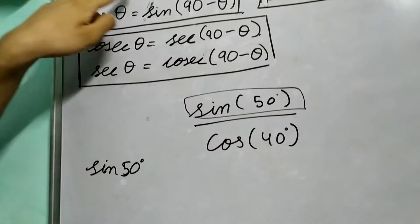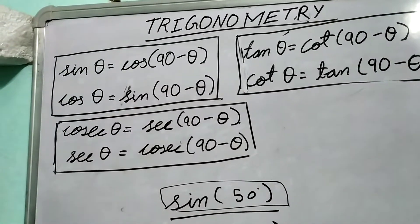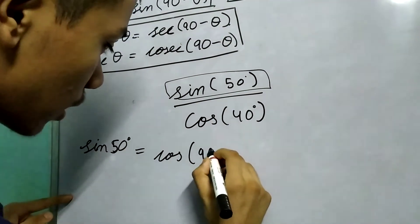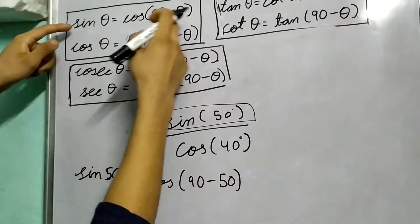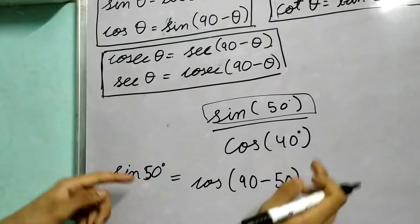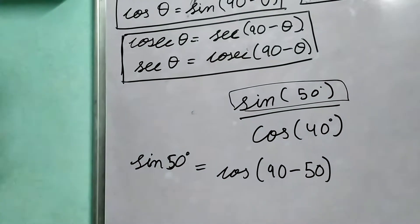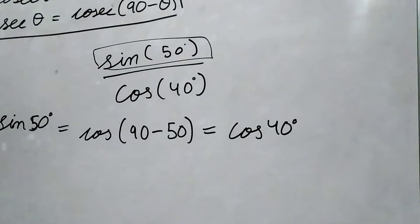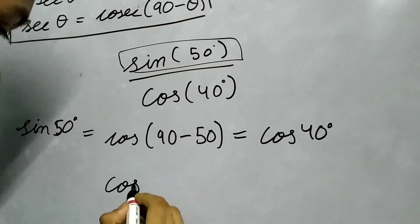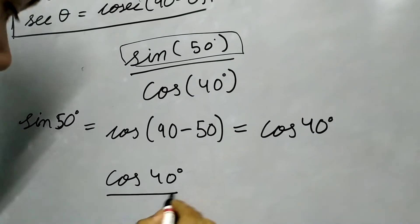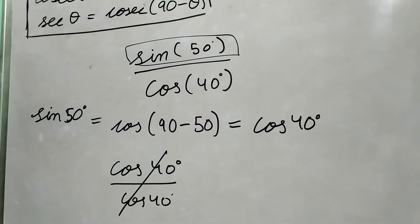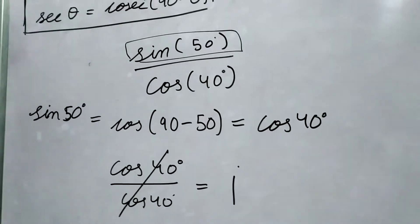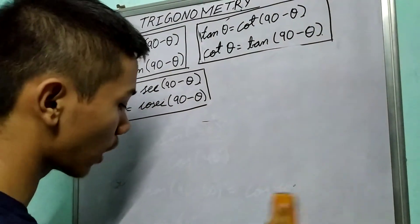We know sin theta is equal to cos of 90 minus theta. Therefore we can write sin 50 degrees as cos of 90 minus 50 degrees. Because theta is essentially 50 degrees here, we substitute and get cos of 40 degrees. So we can write sin 50 degrees as cos of 40 degrees divided by cos of 40 degrees. Now clearly cos 40 degrees cancels out and we are left with 1. This is an easy example showing how to use the property.